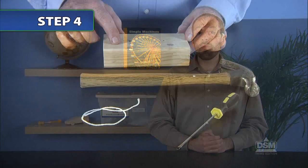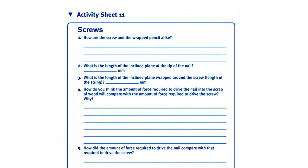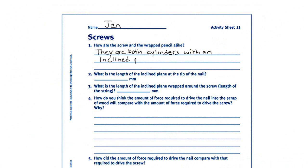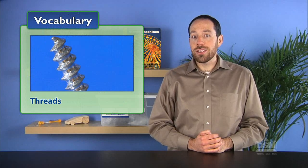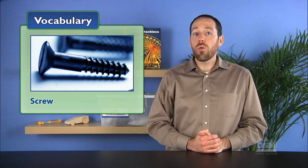Next, distribute a scrap of wood, a hammer, a piece of string, and a screwdriver to each team, and hand out a copy of activity sheet 11, a pair of safety goggles, a nail, and a screw to each student. Invite students to compare the screw with the wrapped pencil and to record their observations on their activity sheets. Inform the class that the protrusions around the shaft of the screw are called threads, even though they're actually a single long inclined plane. Guide them to understand that a screw is a simple machine made up of an inclined plane wrapped around a cylinder.